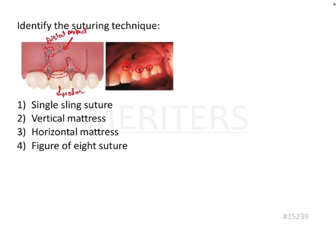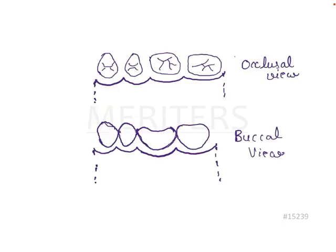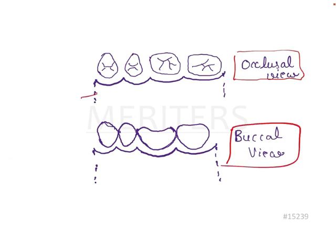You will understand this after I explain the whole technique in detail. I will illustrate this particular technique. Here are the teeth — this is the occlusal view of the teeth and this is the buccal view of the teeth, and here these are the flaps. This particular technique is the single sling suture technique.